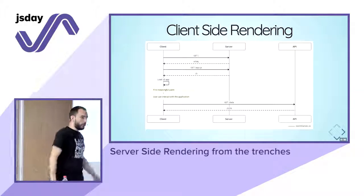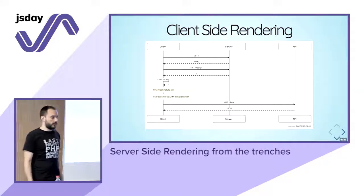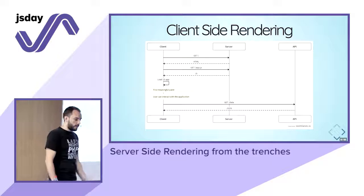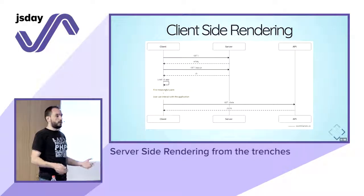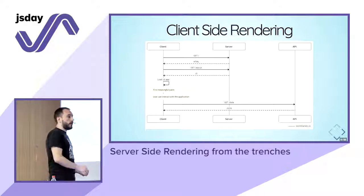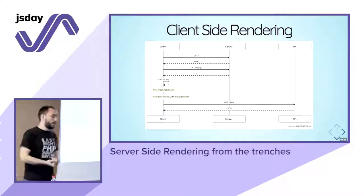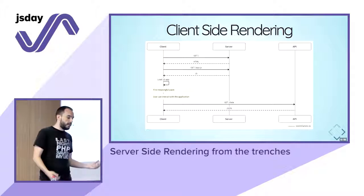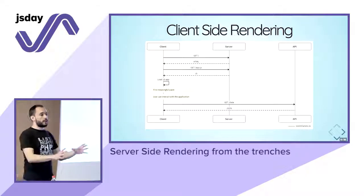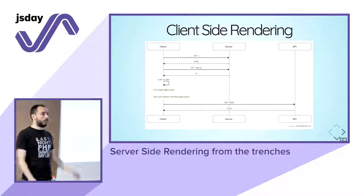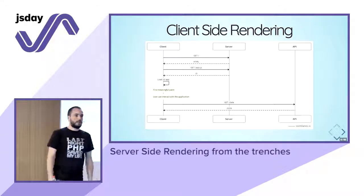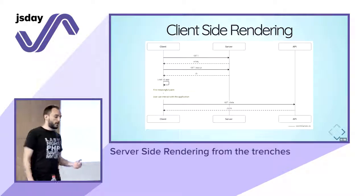I'm sure you all know how it works, so I'm going to quickly describe this. The client requests the page; the page is sent back to the client by the server, but this page is now mostly empty. So the client has to download the application JavaScript bundle, then load the JavaScript application, and then we get the first meaningful paint — basically the UI. Before that, blank page, blank page, blank page. At that point the user can interact with the application, and then for the rest we can do Ajax calls to the API.